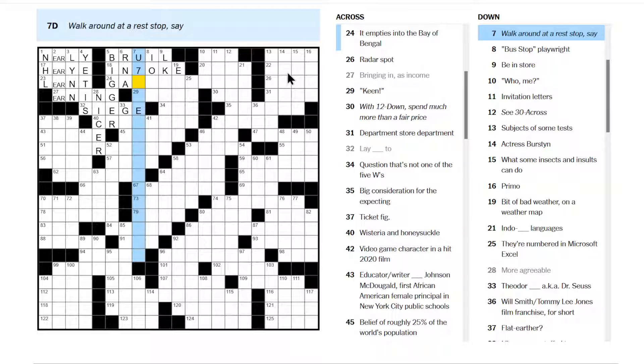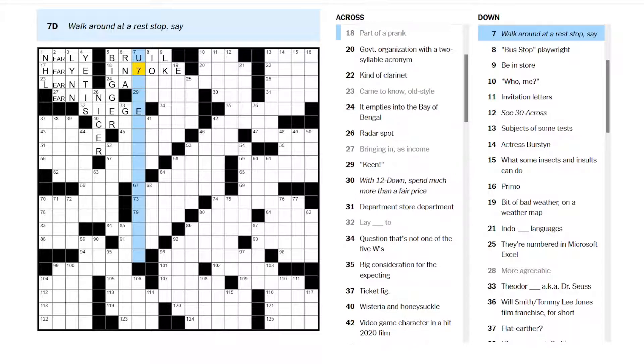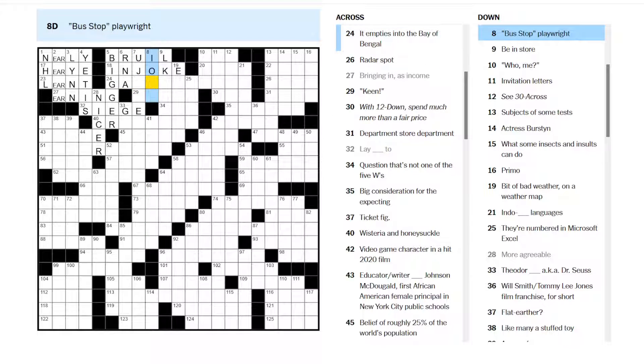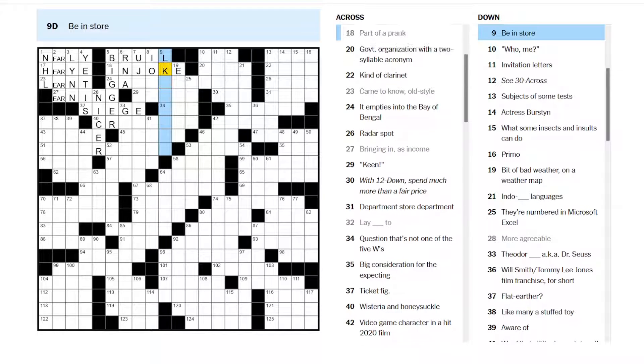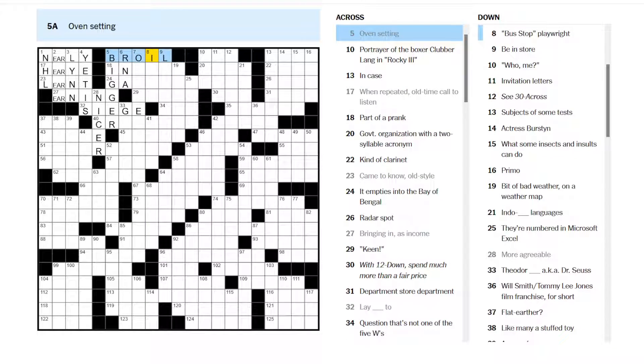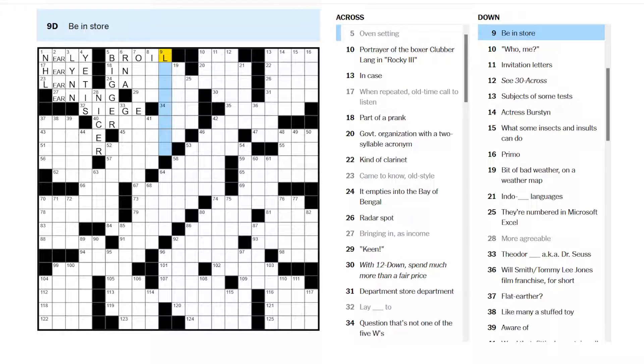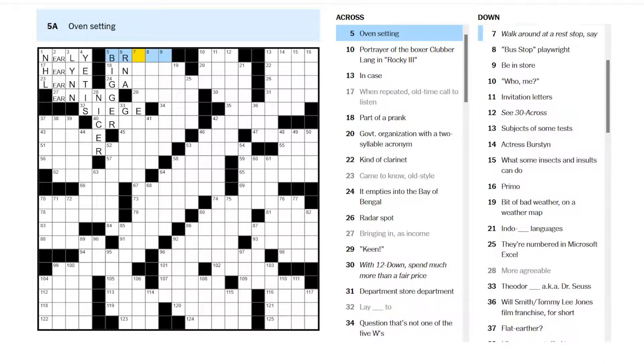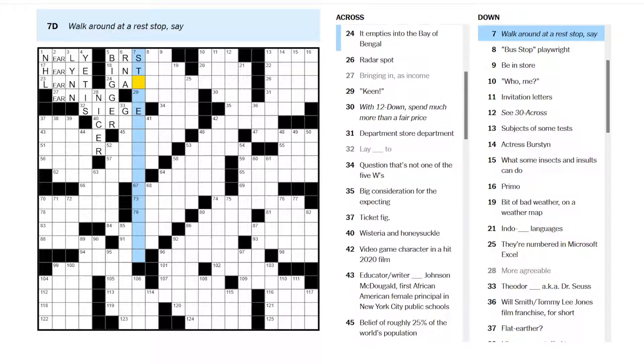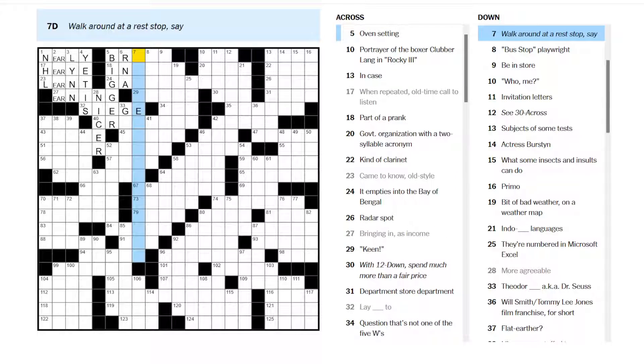As you might have guessed, Kat was involved again, and she will not decide. Just a moment. Let me pause. Bus stop play, right? I don't know. LK is weird, so I don't think this is in-joke. This could still be broil. Be in store. Walk around at a rest stop. Stretch your legs, all right?